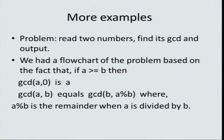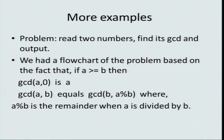We had a flowchart of the problem based on the fact that if a is greater than or equal to b, then GCD(a, 0): if b is 0 then GCD(a, 0) is a. Otherwise GCD(a, b) is the same as GCD(b, a modulo b), where a modulo b — written as a % b — is the remainder when a is divided by b. Let us now try to write the program in C using a while loop.